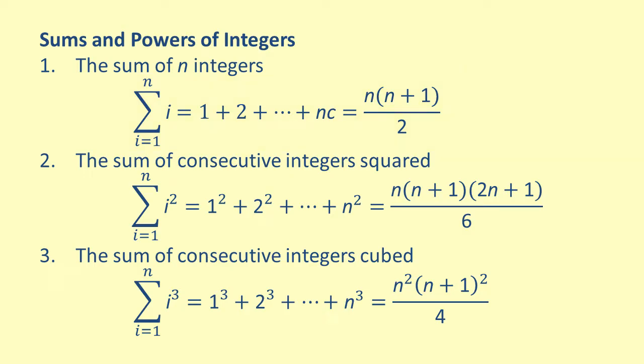Next, we can find the sum of consecutive squared integers using the formula n times the quantity n plus 1 times the quantity 2n plus 1 all over 6.